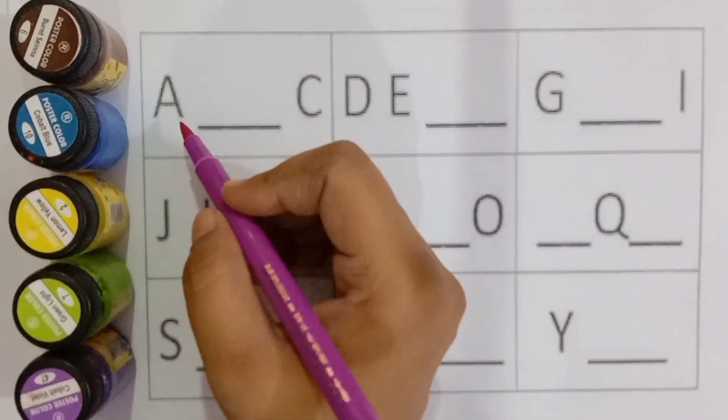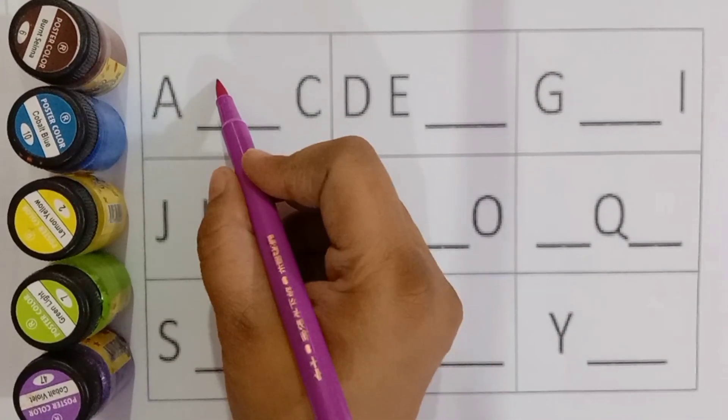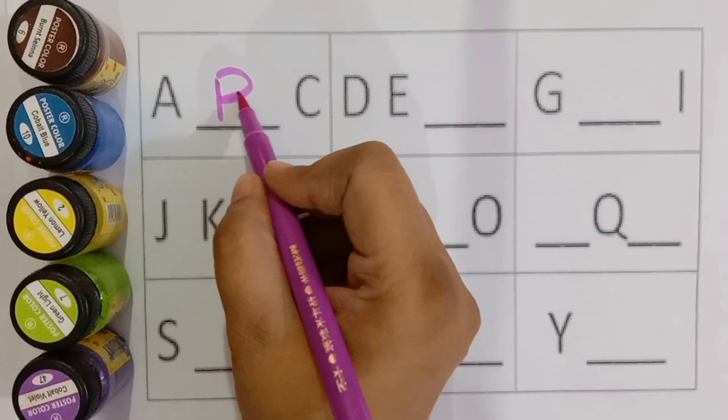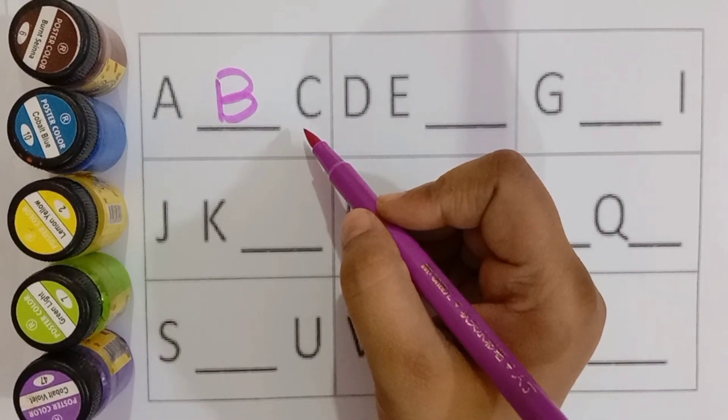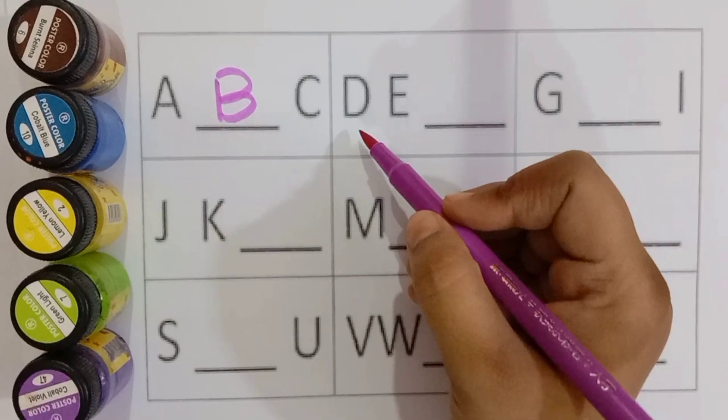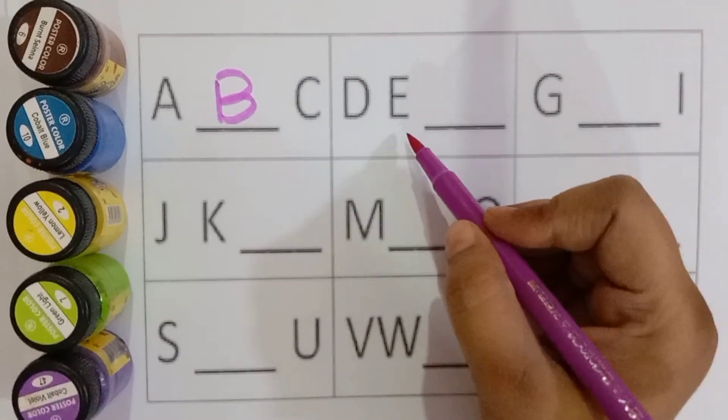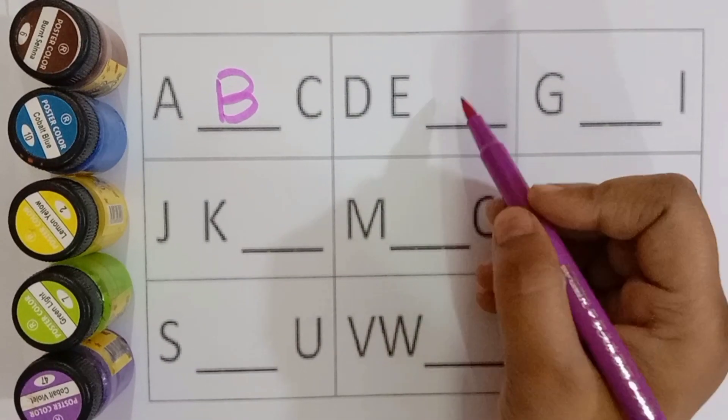A. A for apple. B. B for banana, B for banana. C. C for cat. D for duck. E. E for elephant.